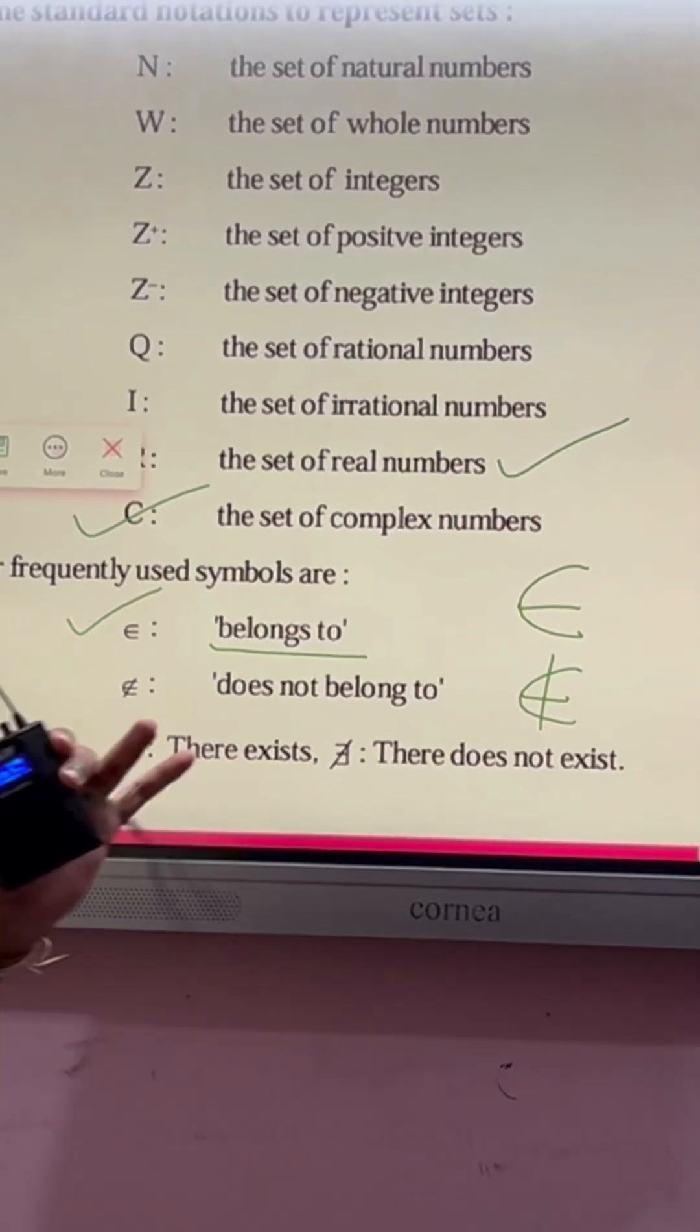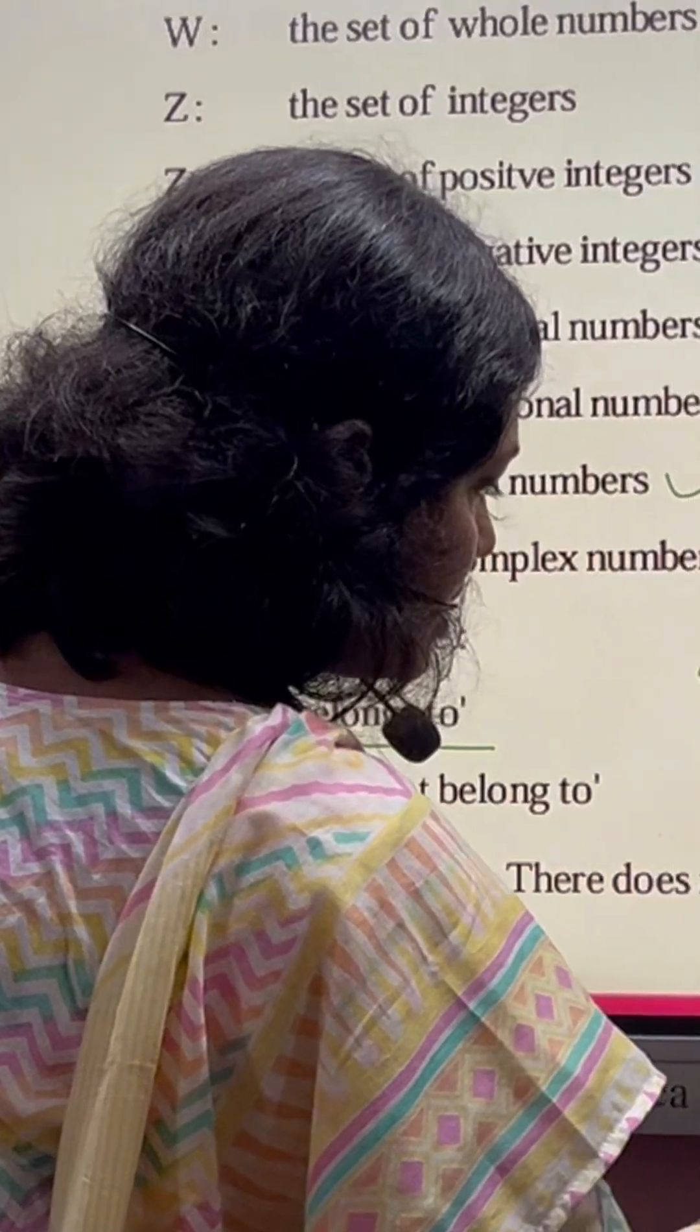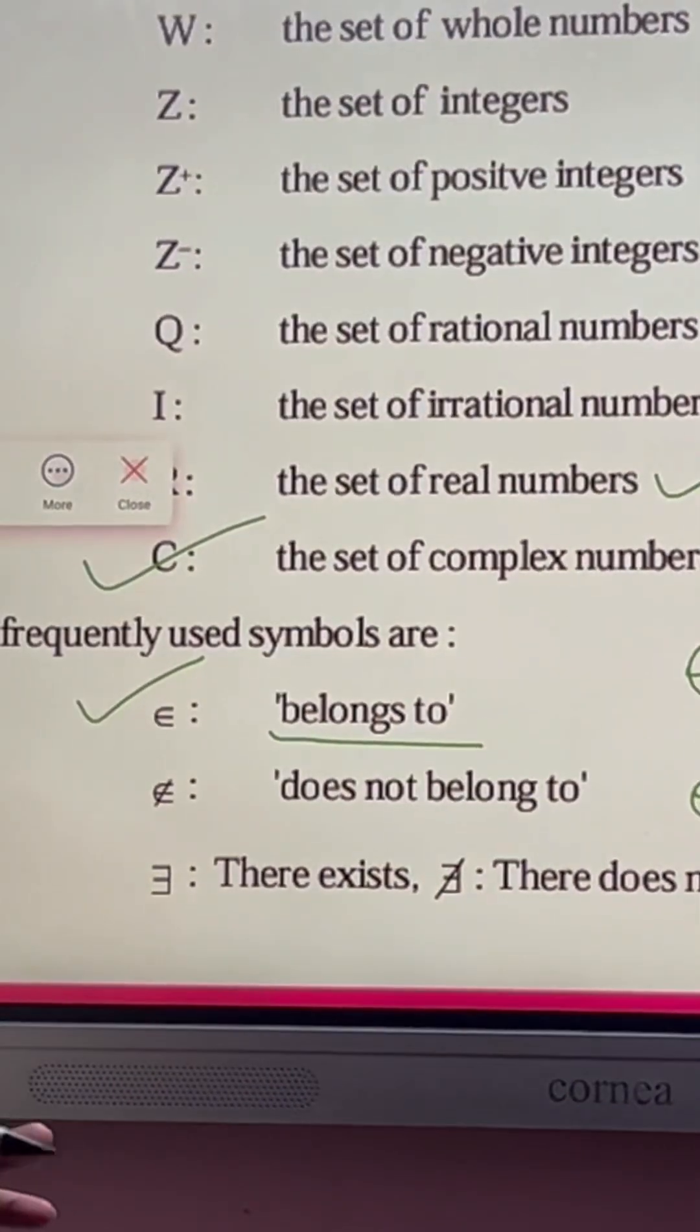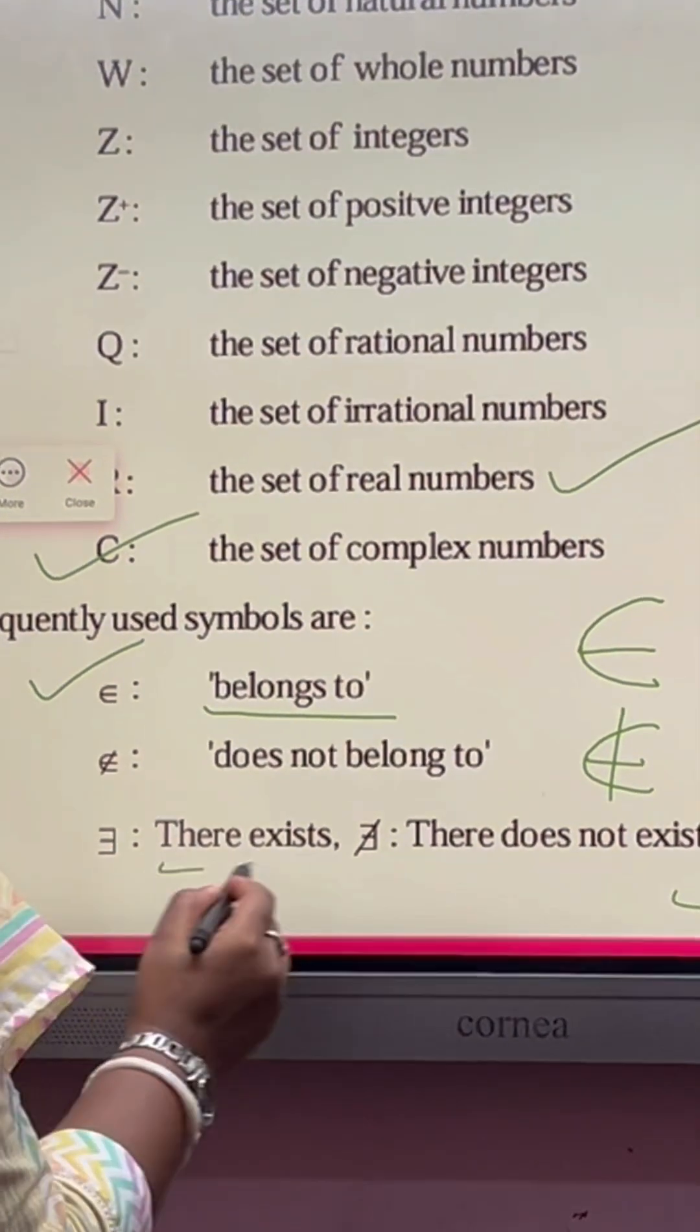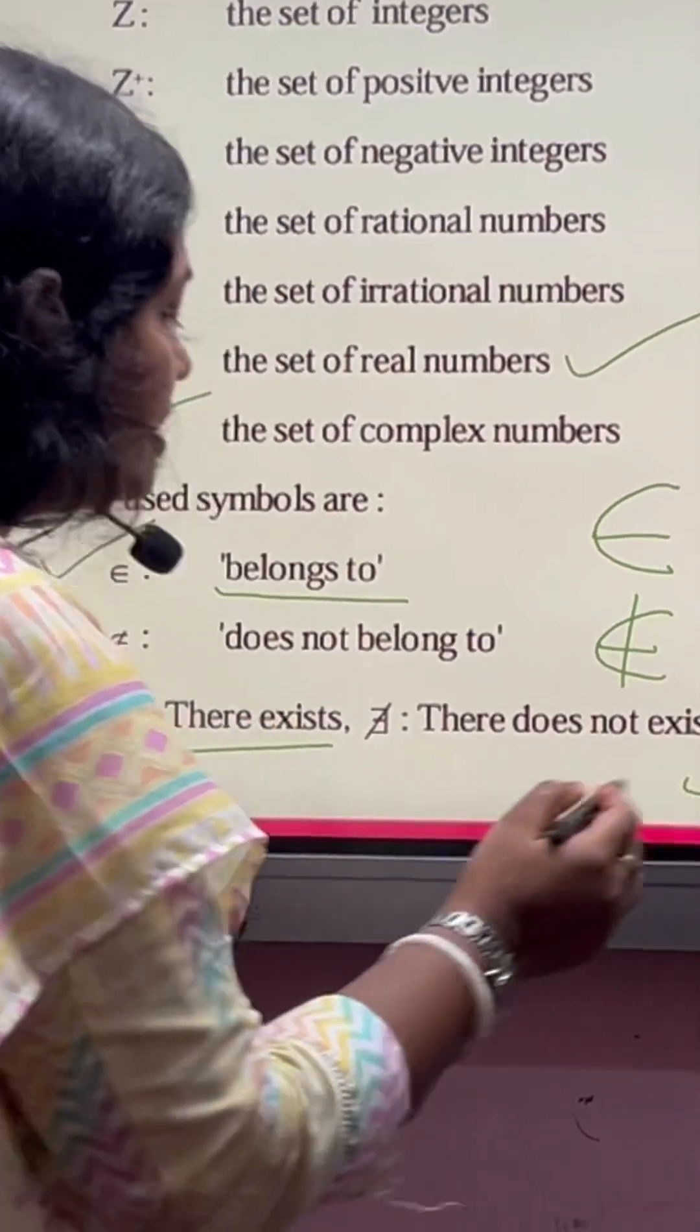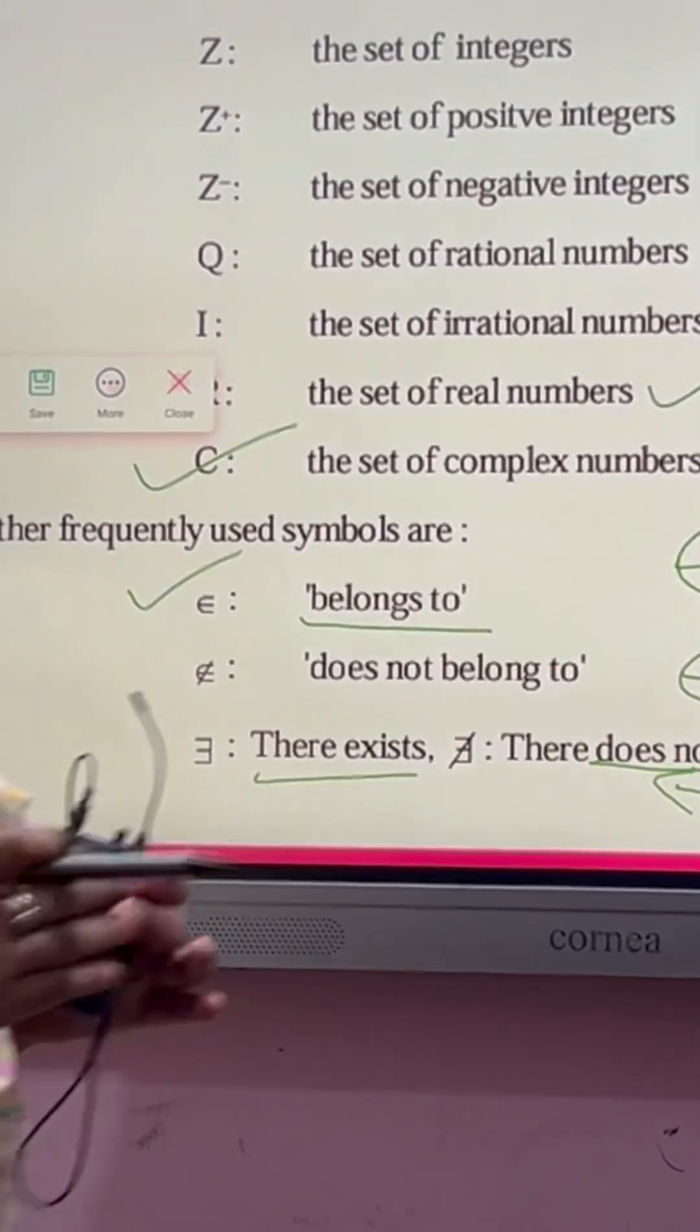That means ∉ does not belong to. And some notations are there. The ∃ symbol in opposite relation is called 'there exists'. There exists.